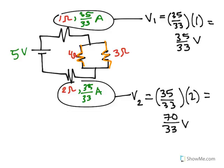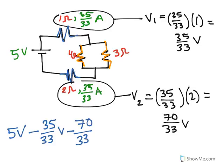So what we can actually do here is just say, all right, let's take our total voltage, 5 volts, and we're going to subtract the voltage drop here and the voltage drop here. So we're going to subtract 35 over 33 volts, and then we're going to subtract 70 over 33 volts. So we're going to end up with 5 minus 105 over 33 volts.